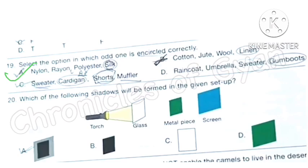Question 20: Which of the following shadows will be formed in the given setup? Option A is the correct answer.